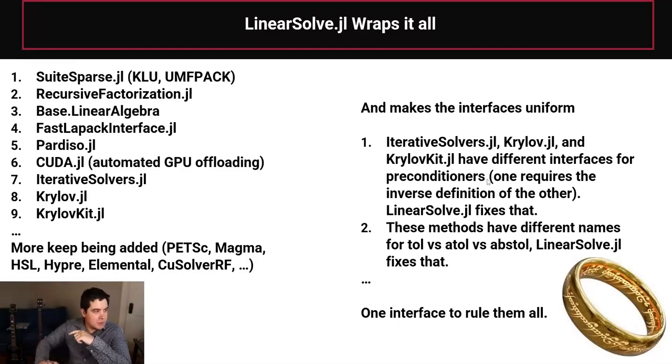they actually have different interfaces for preconditioners. One requires the inverse definition of another. And so if you define a preconditioner for one of these packages, it doesn't work with the other one. We fix that. So we just say, this is how we define preconditioners for LinearSolve, and we invert it internally inside of the wrapper, because this is nonsense. You shouldn't have to deal with this downstream in a Newton package. That's just an external detail from writing a Newton solver. The other thing is that each of these packages can have different names for arguments, like tol versus atol versus abstol. And LinearSolve.jl has a common interface over it that says, this is how we define things. And we do rewriting inside of the wrapper.